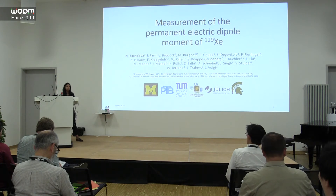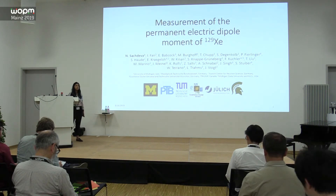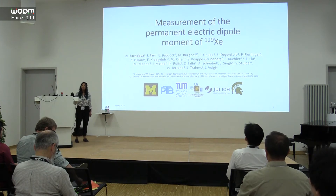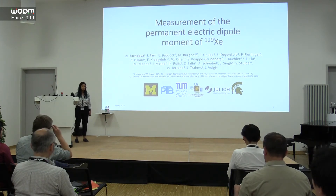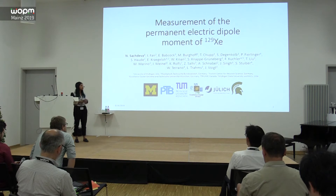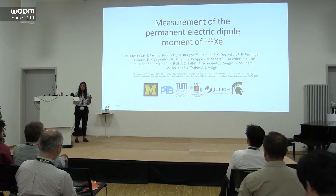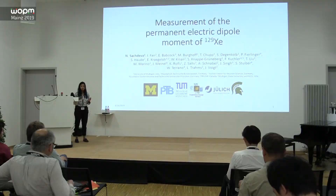First I'll start at the beginning with the motivation for this experiment — why we care about EDMs in general. That starts with matter-antimatter asymmetry. We don't think matter-antimatter asymmetry is just an initial condition of the universe because of inflation; it would be washed out if all processes during inflation were matter-antimatter symmetric. So we need to dynamically create a baryon asymmetry.